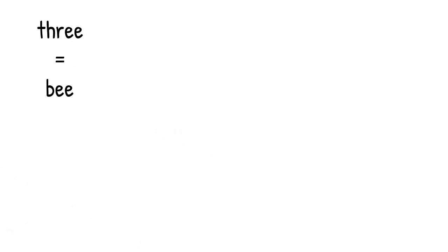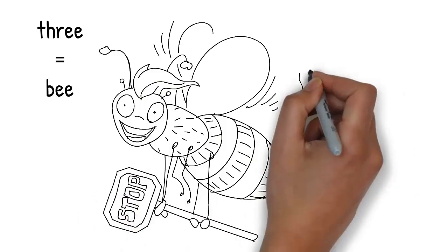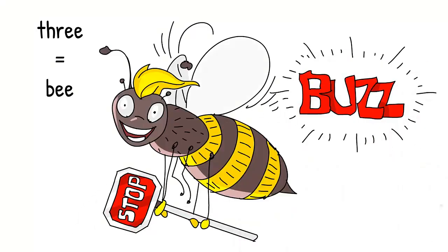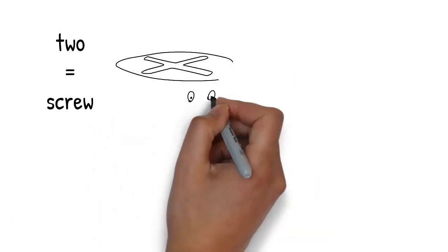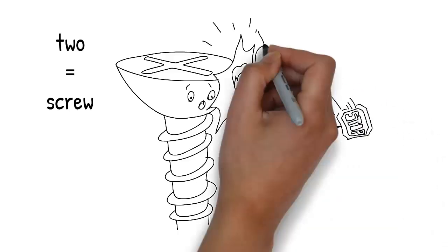Out of nowhere, an enormous bee grabs the sign and flies away with it. When you imagine that bee, you'll think of the number three. The bee isn't watching where it's flying and crashes right into an enormous screw. Screw rhymes with two.